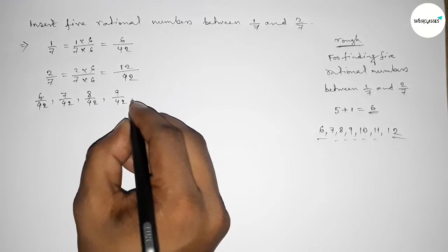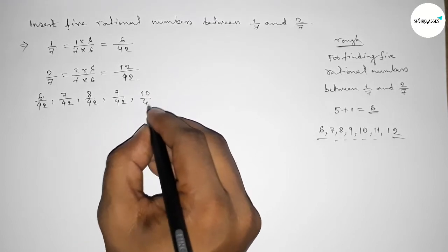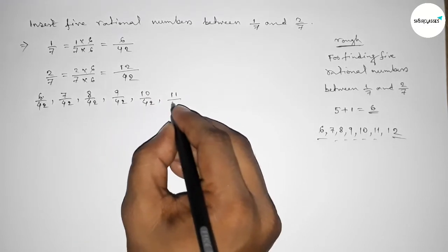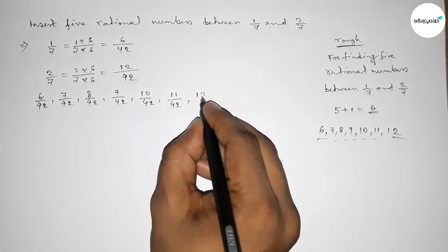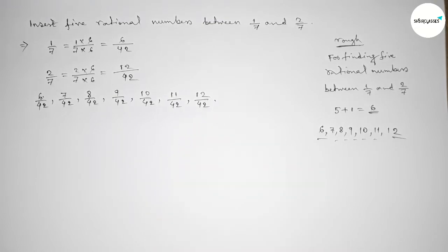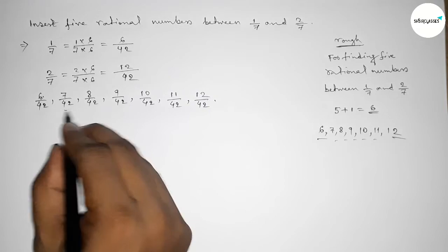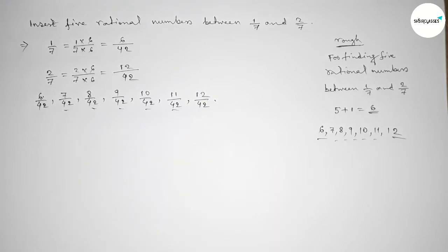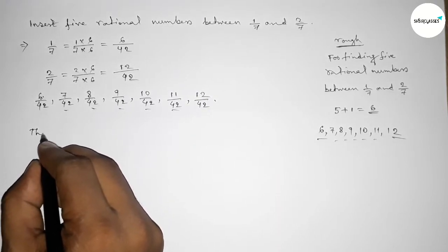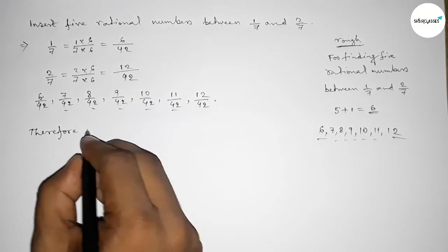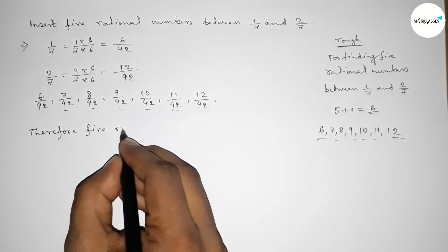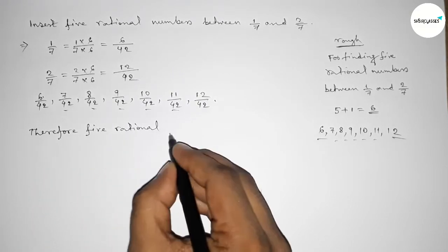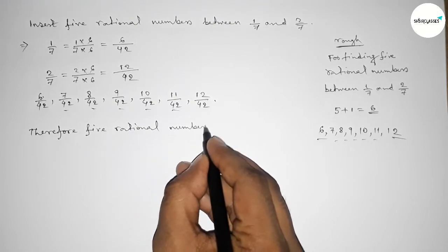So here: 6/42, 7/42, 8/42, 9/42, 10/42 up to 12/42. Between these are the 5 required rational numbers between 1/7 and 2/7.